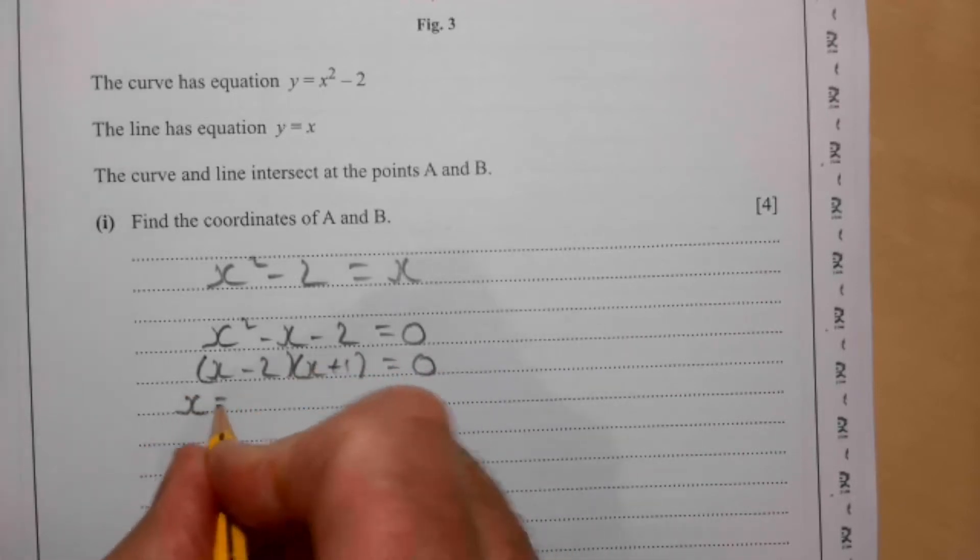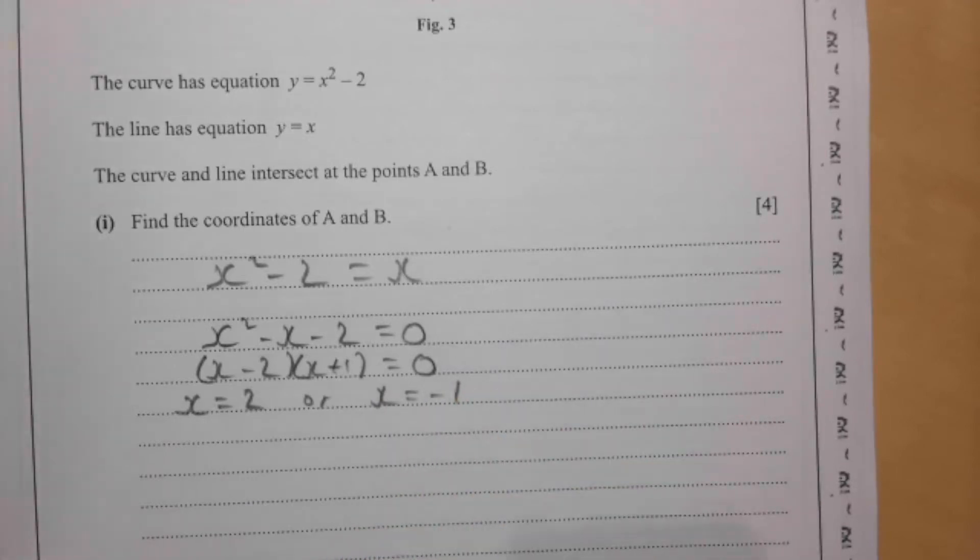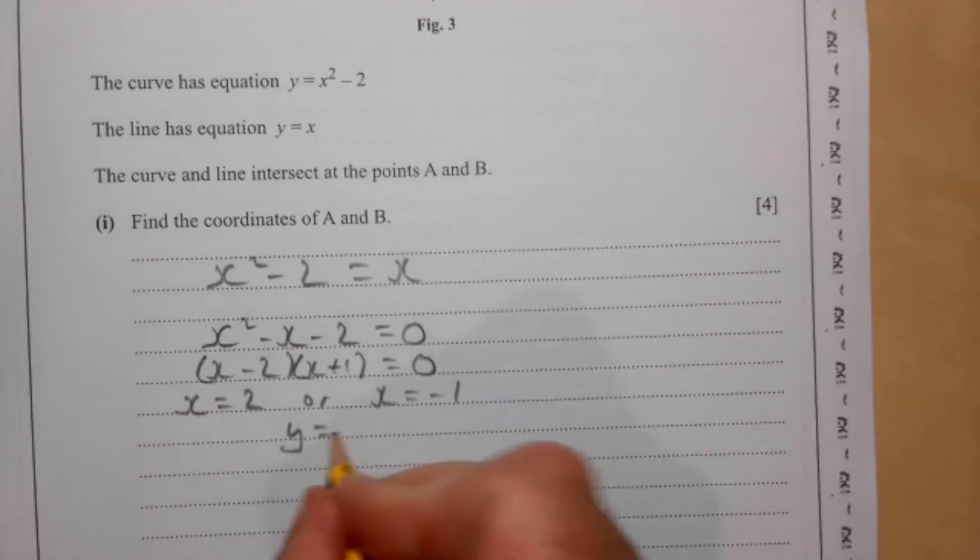That means here we have x equals 2, or x is minus 1. To find the y coordinates, y equals x, so it doesn't get much more straightforward than that.